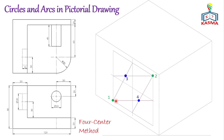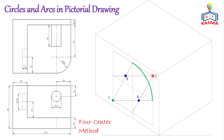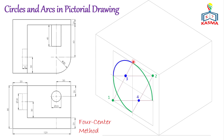The projected construction lines intersect the opposite side of the rhombus at the midpoint. The first arc of the ellipse is constructed using the first center — arrange your compass from center one to the rhombus edge and draw the arc. Repeat with center two for the lower arc. Then using centers three and four with their corresponding radii, construct the remaining two arcs to complete the elliptical shape.